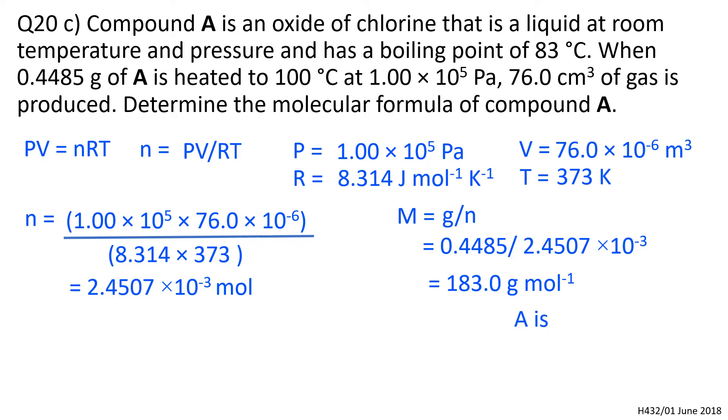Now we need to use a bit of trial and error. There is a clue - it's an oxide of chlorine. If there is one atom of chlorine, it's going to end in 0.5. The fact that our value ends in 0.0 means there are going to be an even number of chlorines in this compound. Try two.